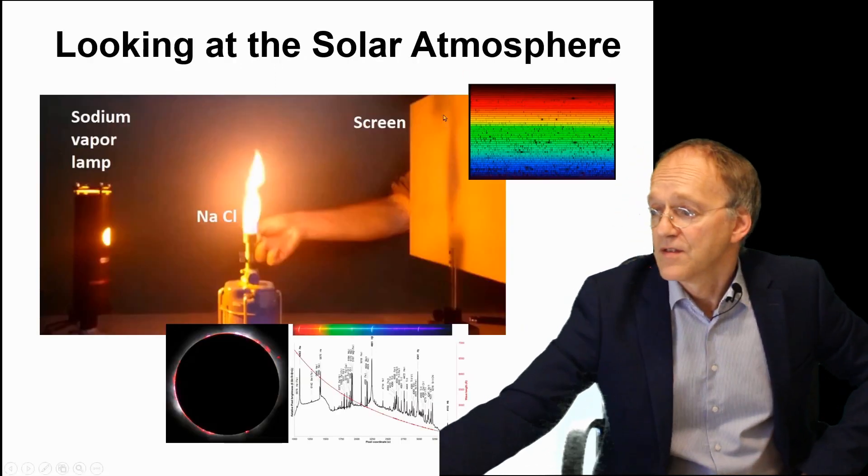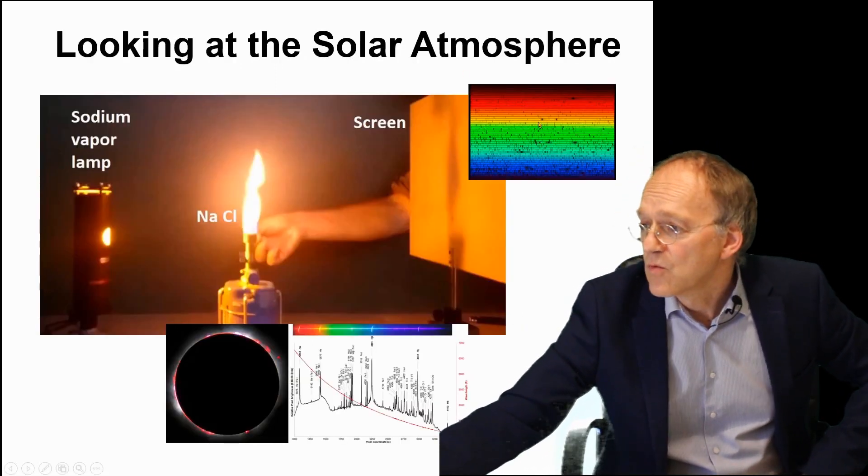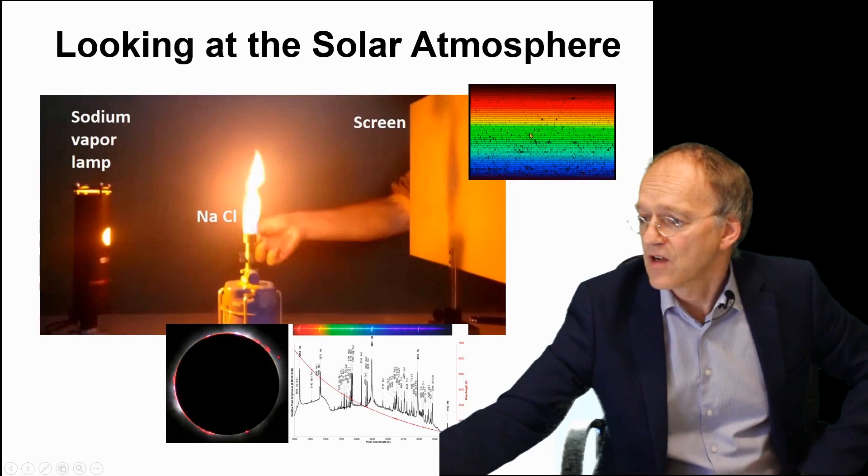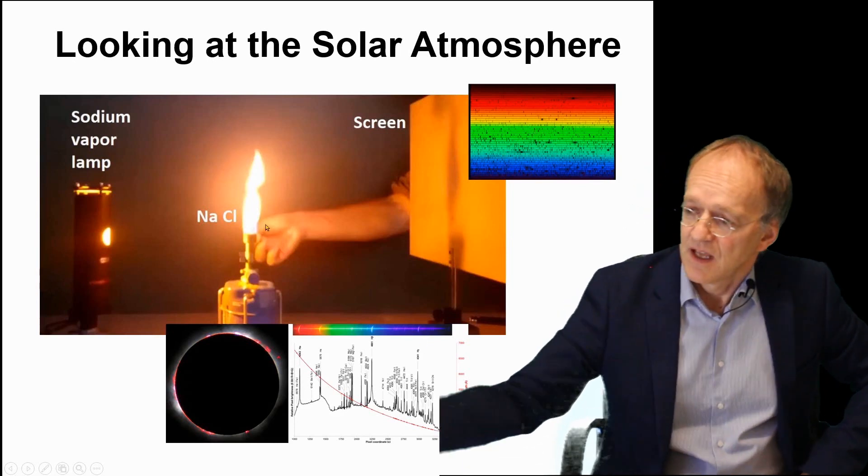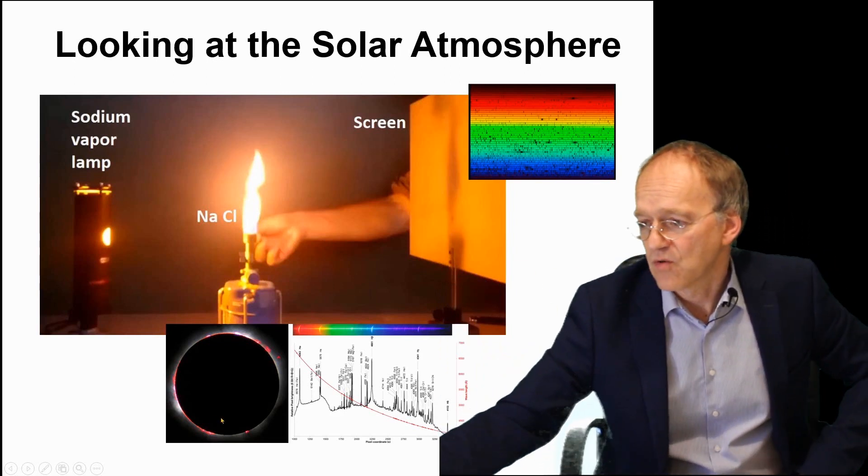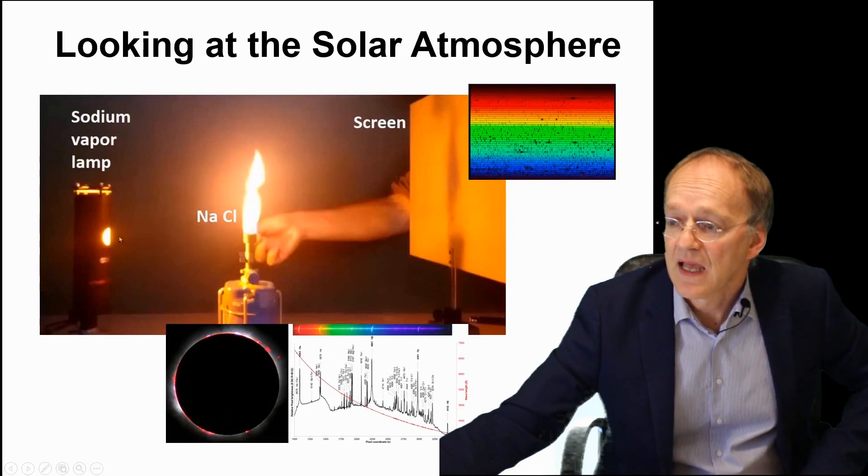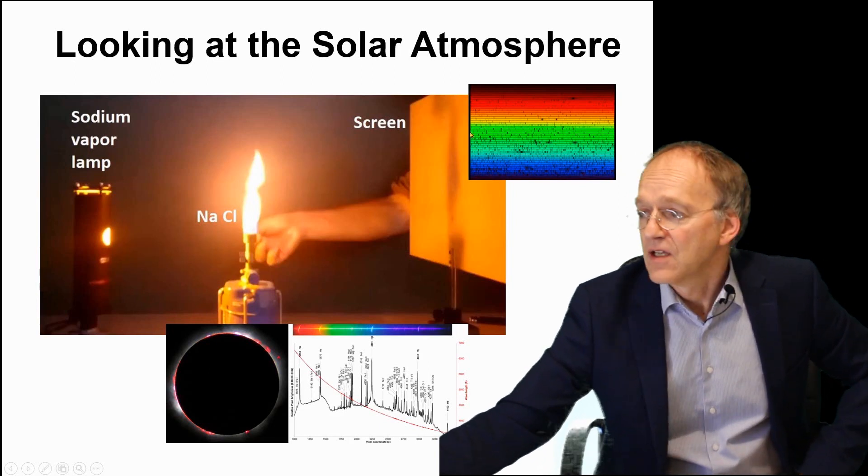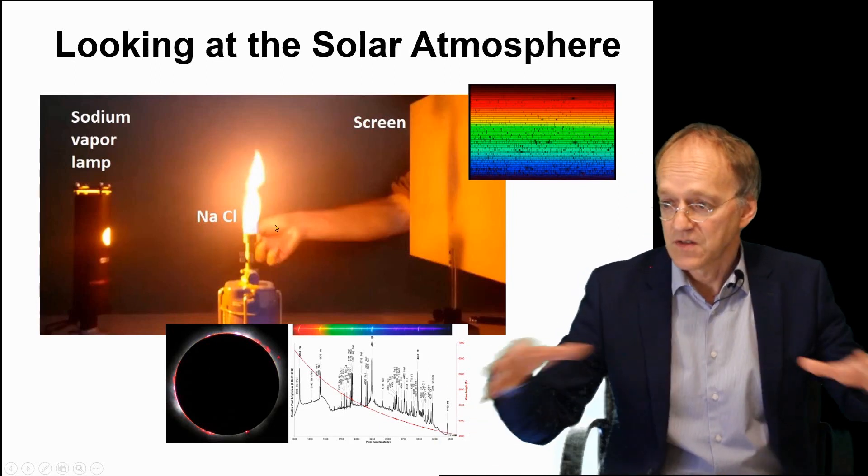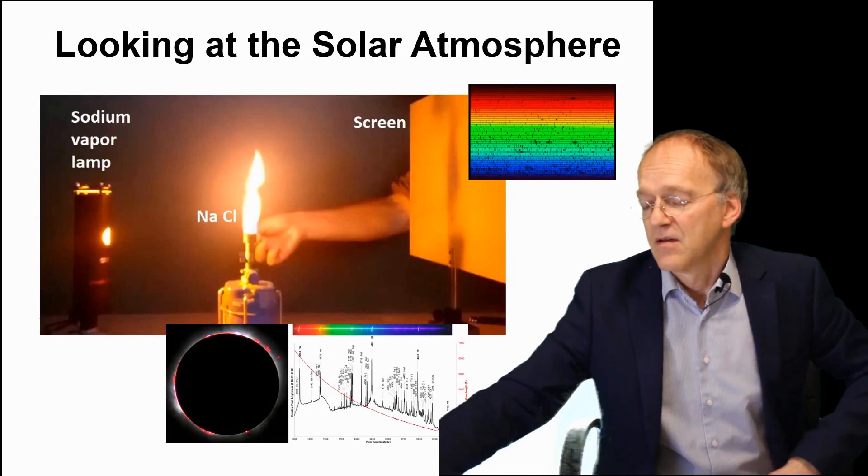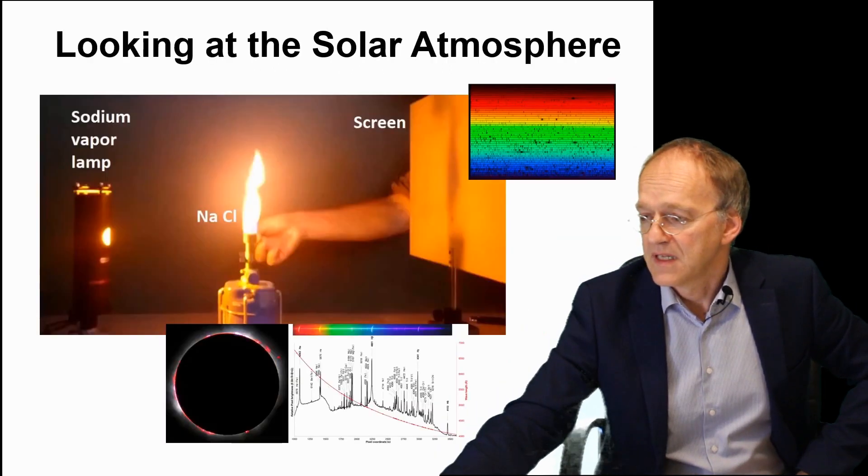So if we summarize, this black shadow on the screen would correspond to these black lines in the Fraunhofer spectrum, and this light coming out laterally would correspond to the chromospheric spectrum. Of course, instead of just one line of yellow light, you have a continuous spectrum of the sun itself that produces all the light in the beginning.